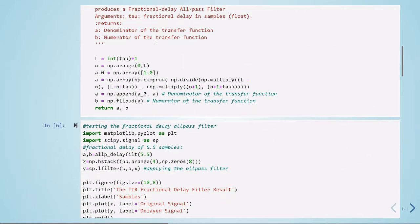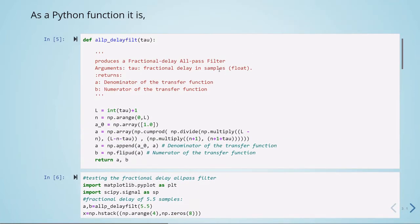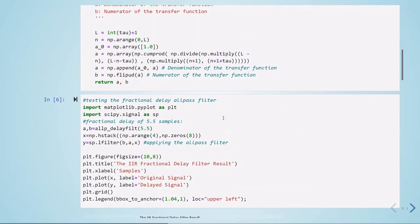We can test this fractional delay. Suppose we want a fractional delay of 5.5 samples. We will give this function we defined the argument 5.5, which is the delay in samples. It will give us back